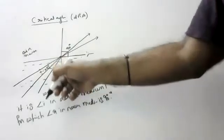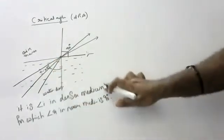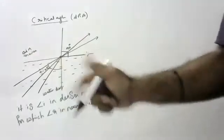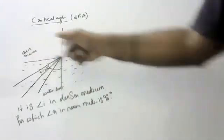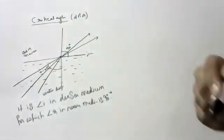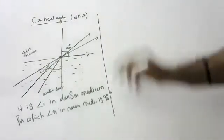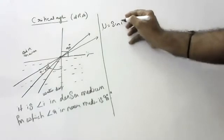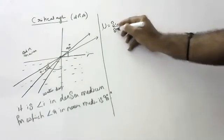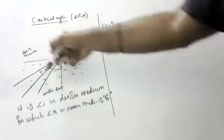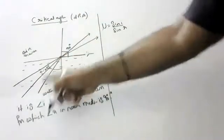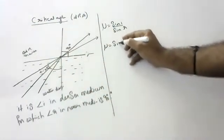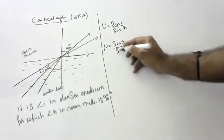The angle of incidence in denser medium for which the angle of refraction in the rare medium is 90 degrees is called critical angle. Now, mu is equal to sine i by sine r when light goes from rare to denser medium. For denser to rare, mu equals sine r by sine i.